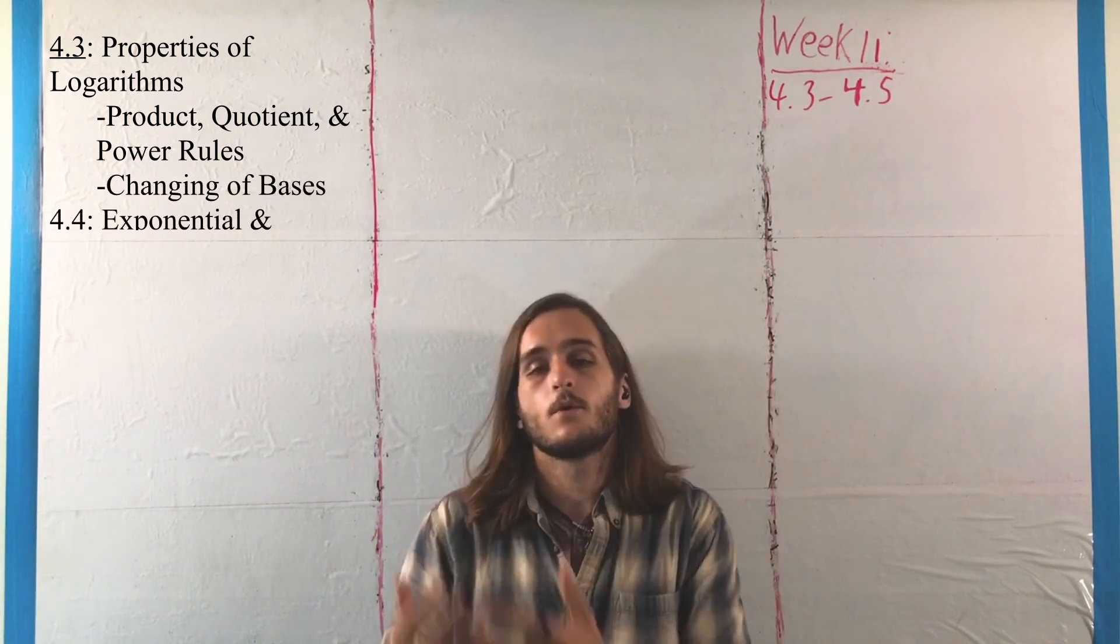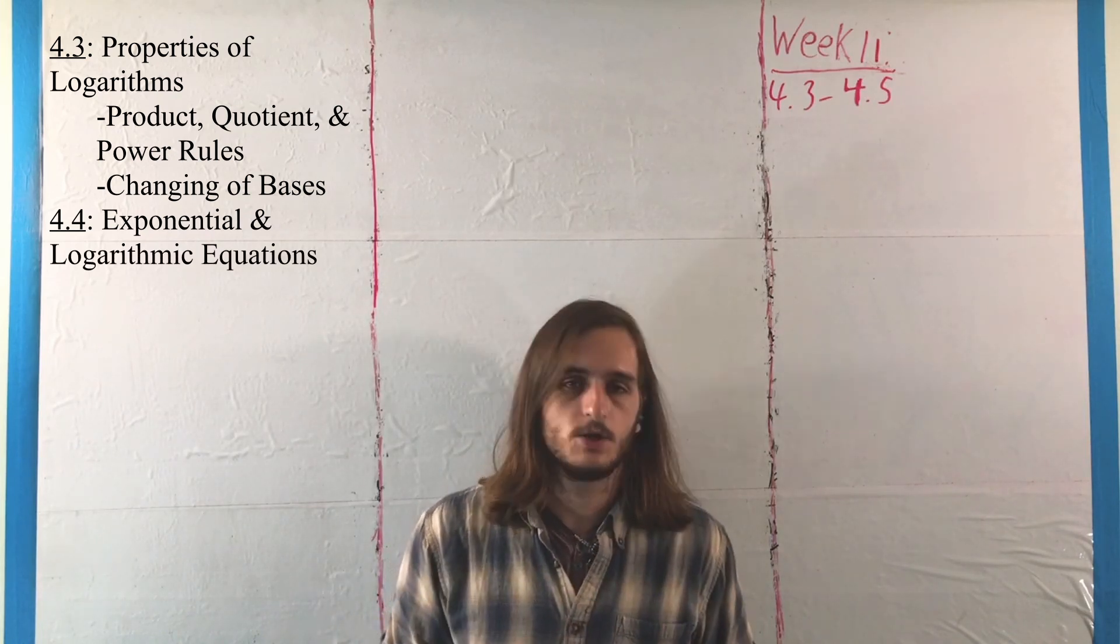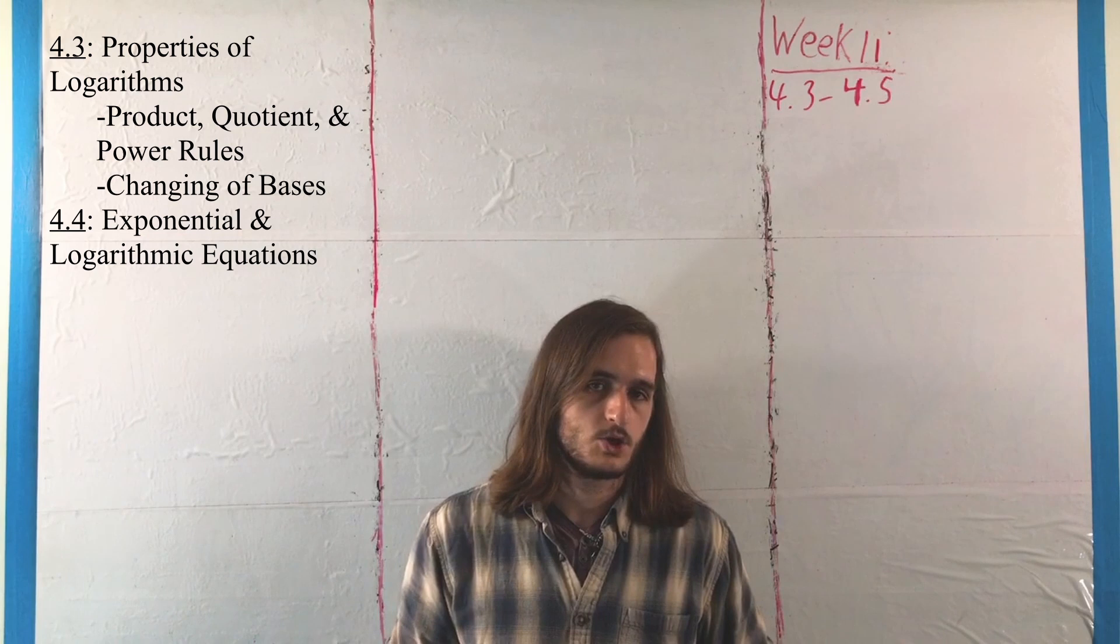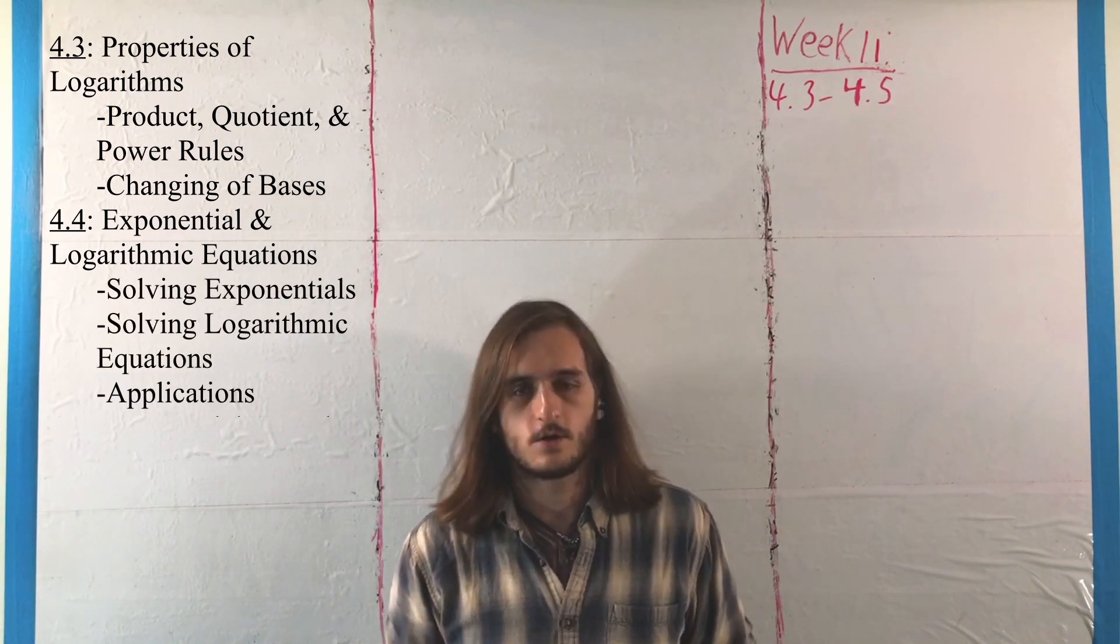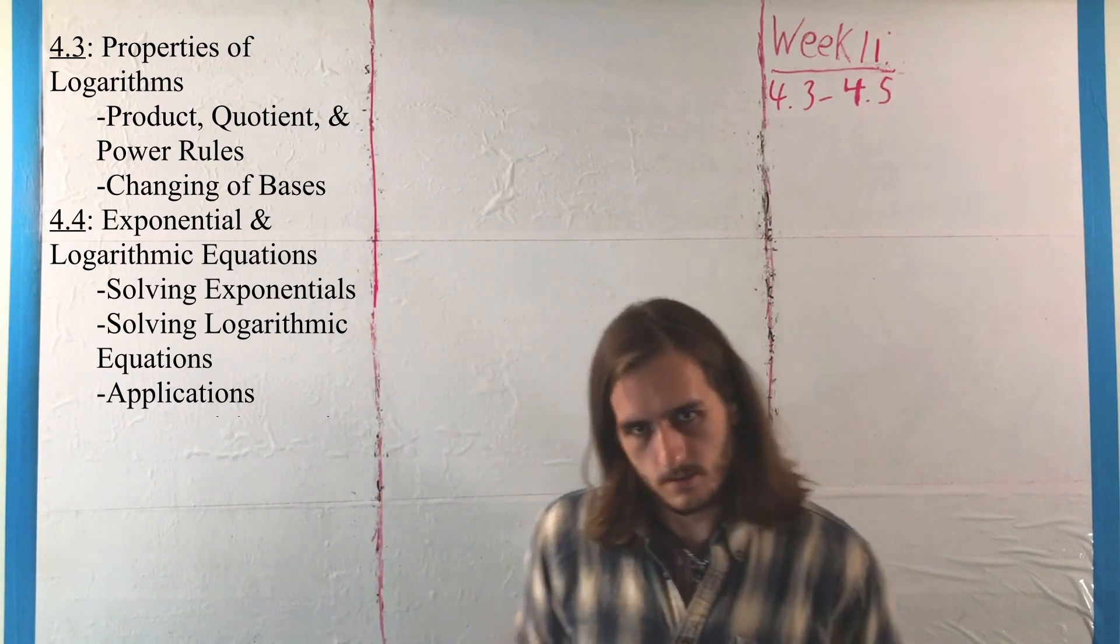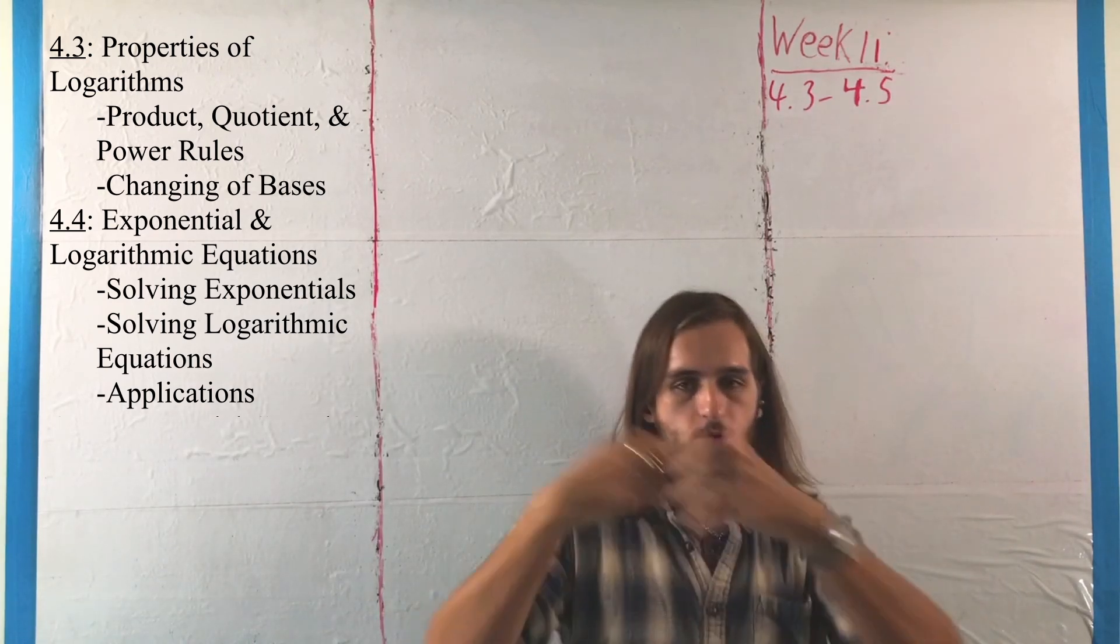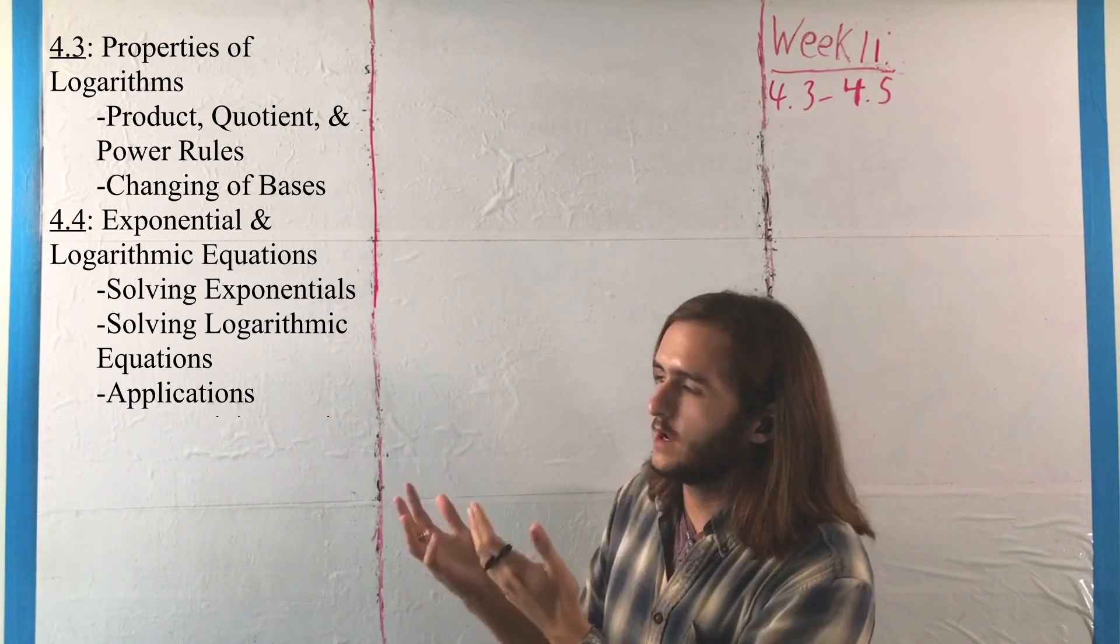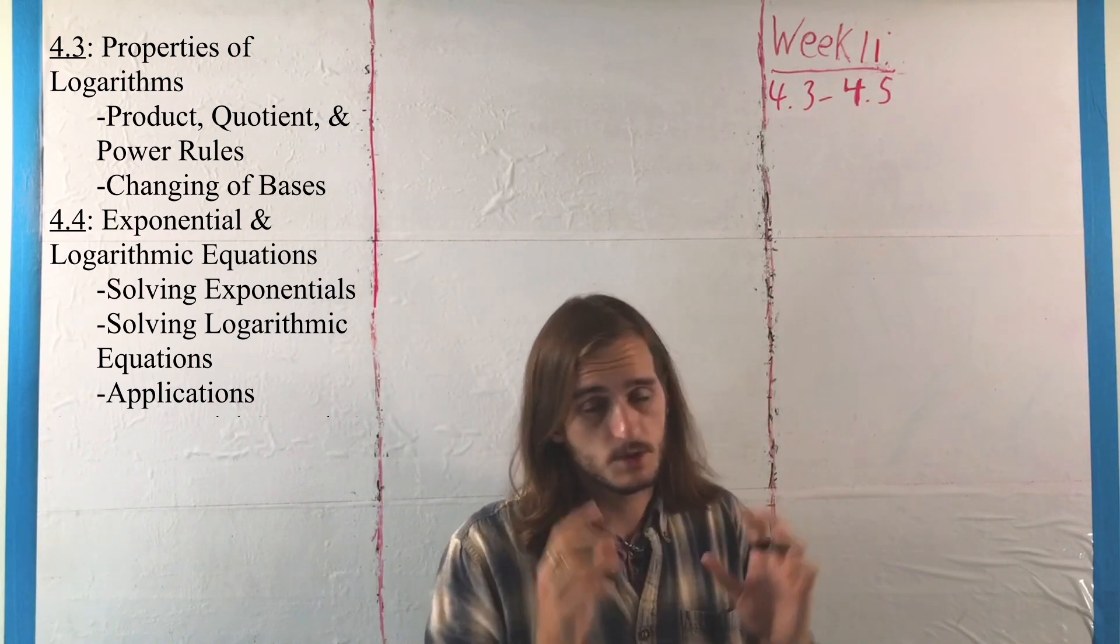Then in 4.4, we're going to look at how we can use all of these strategies to solve exponential and logarithmic equations, where basically everything we're going to do here relies on the one-to-one property of exponents and logarithms. If we've got a logarithm, we're going to throw in an exponent to get rid of it. If we've got an exponent, we're going to throw in a logarithm to get rid of it, rearrange, and get some answers that probably aren't going to look very nice, but will at least be actual numbers.